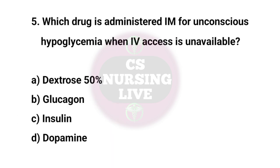Question No. 5. Which drug is administered IM for unconscious hypoglycemia when IV access is unavailable? Right answer is B. Glucagon.